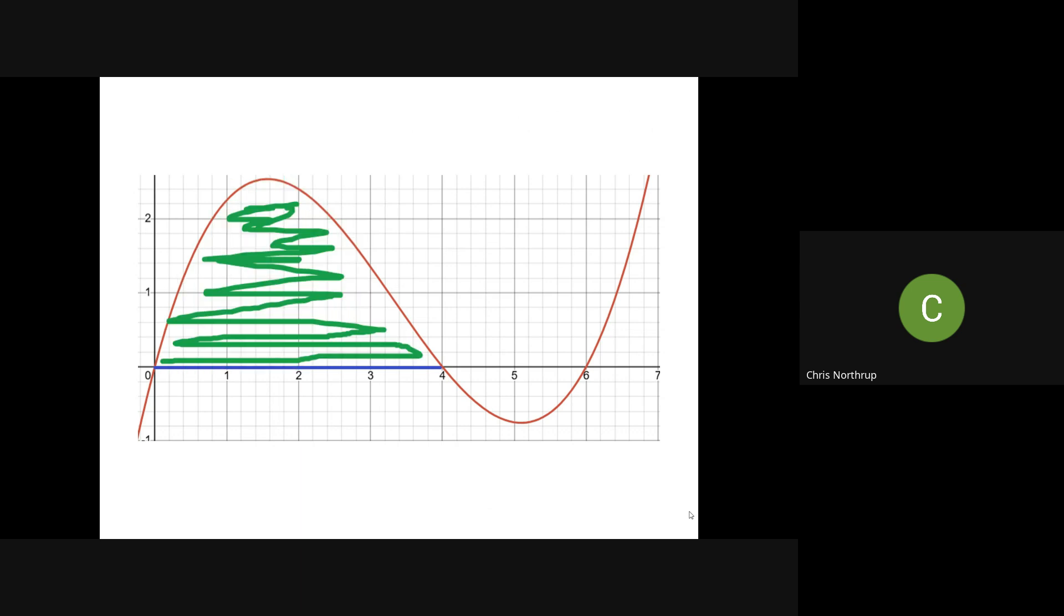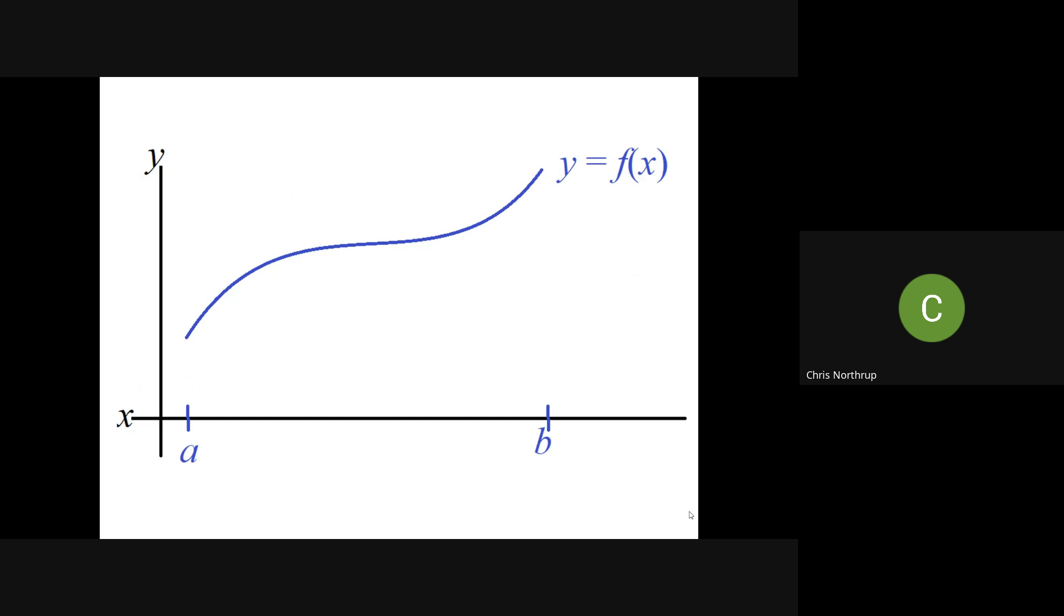So we're going to come up with a technique to get the exact area. Let's say I have a random curve y equals f of x on the interval a to b, and I pick an x value between a and b, I'll call it x sub i. It could be I have 20 x values or 10 x values, it really just depends on how many rectangles you're choosing to approximate that area.